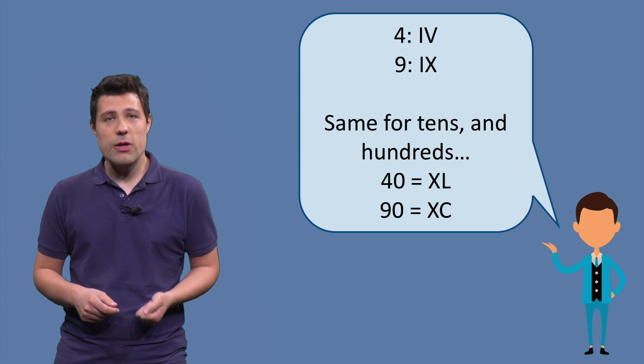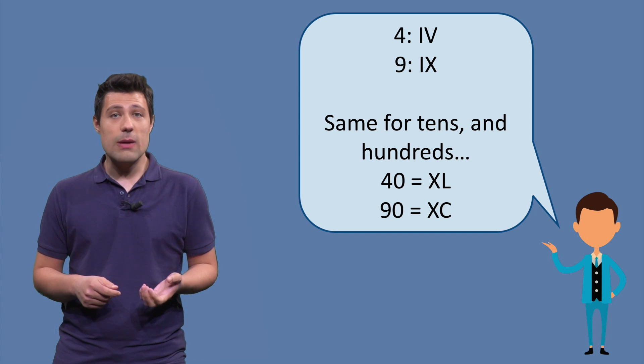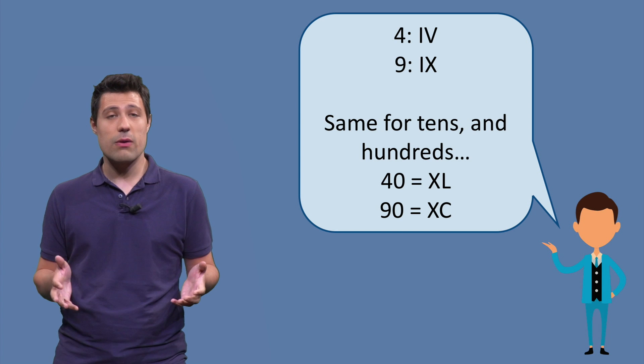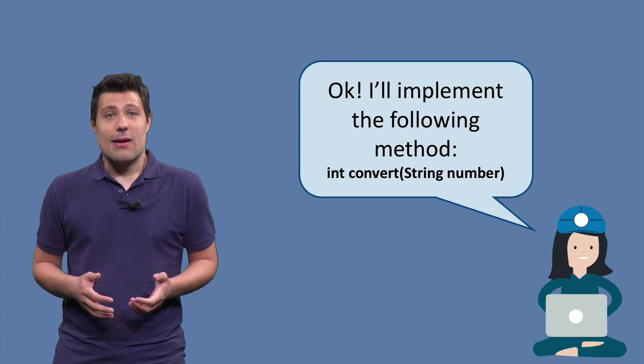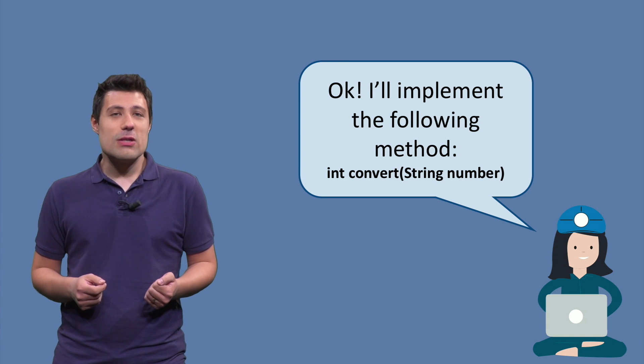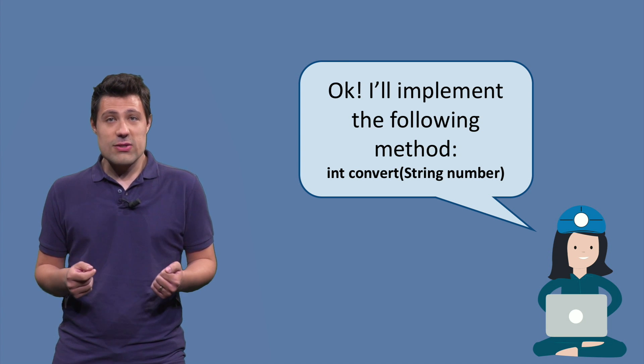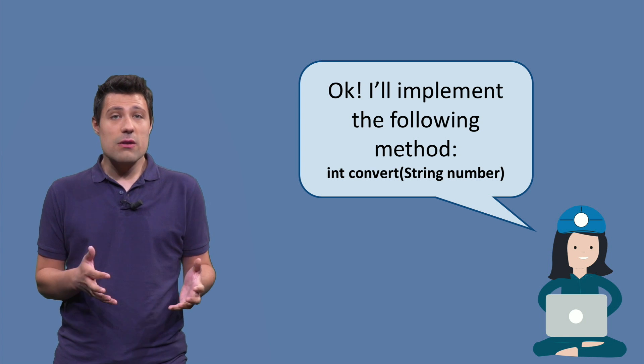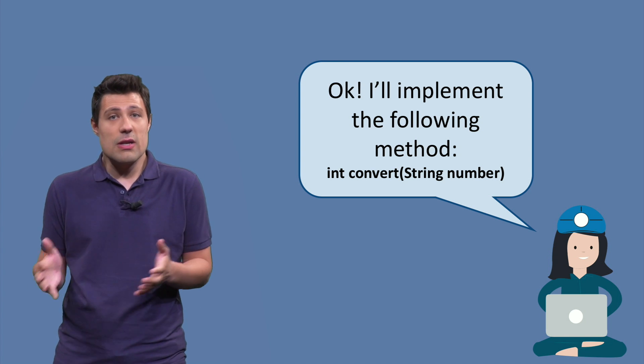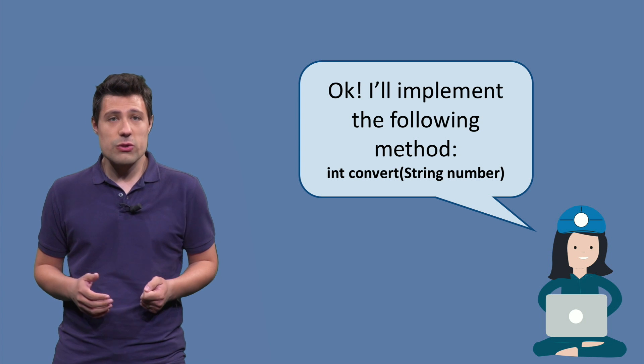If you have more questions about roman numerals, you can actually google it. The Wikipedia page has a nice explanation about how it works. But now it is your time, or our time as a developer to implement this program. And my suggestion is, create a method that is called convert, that receives a string, the roman numeral itself, and it returns an integer. That's what I want you to do.